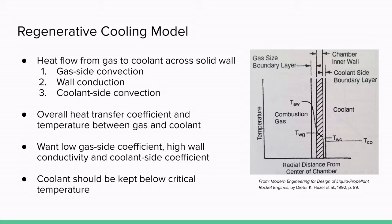The model for regenerative cooling in a nozzle considers heat transfer from the combustion products to the coolant across three main layers, as shown in the figure on the right. It considers forced convection across the gas side boundary layer, conduction through the chamber wall, and forced convection across the coolant side boundary layer.